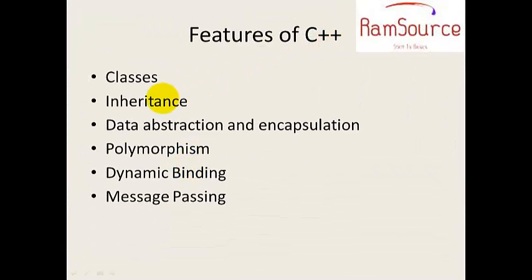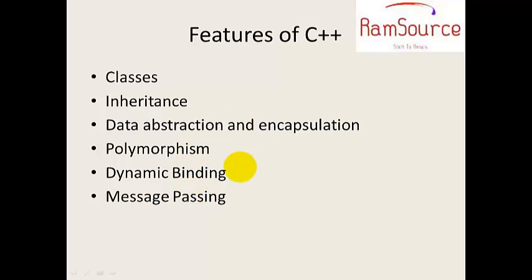Features of C++: Classes, Inheritance, Data Abstraction and Encapsulation, Polymorphism, Dynamic Binding, and Message Passing. These are the main C++ object-oriented programming concepts, which will be covered in upcoming slides.